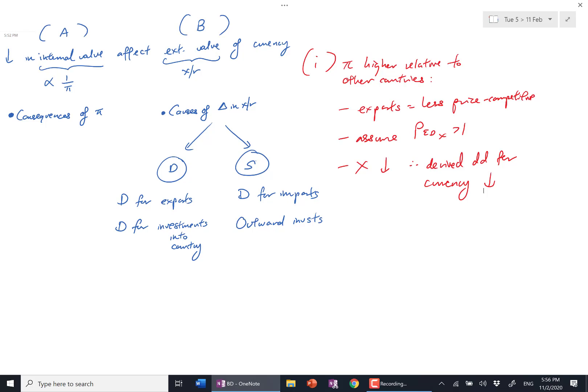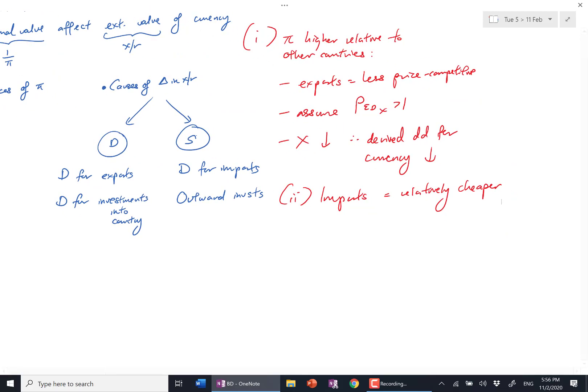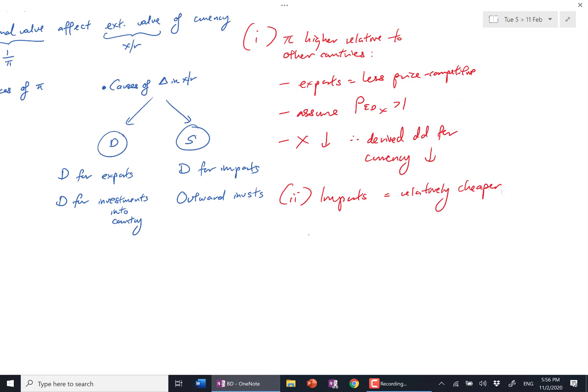That's why by extension this one is important: demand for the currency falls. The first link. Second, you can even say imports are now relatively cheaper. If there's inflation in your country, like if the face masks are very expensive in Singapore, some people may want to buy from Malaysia.